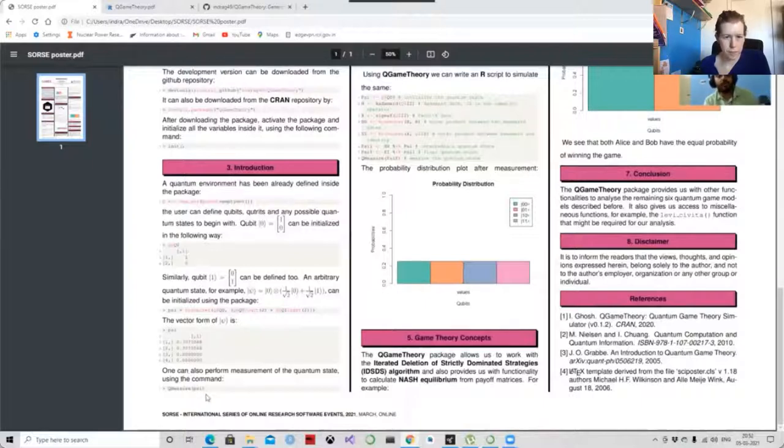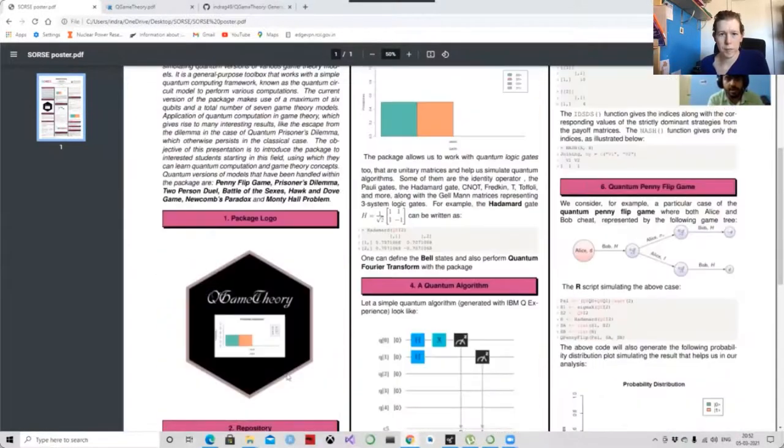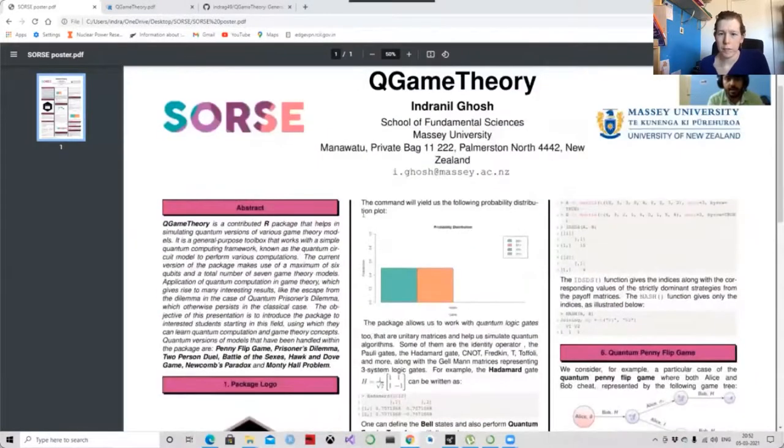You can also perform quantum measurement simulations on these quantum states using the q-measure function and you will get this probability density plot each and every time you use the q-measure function.